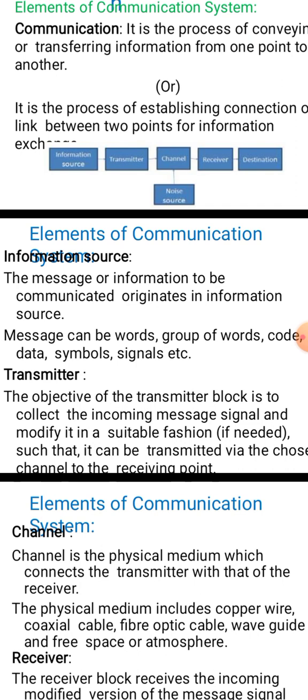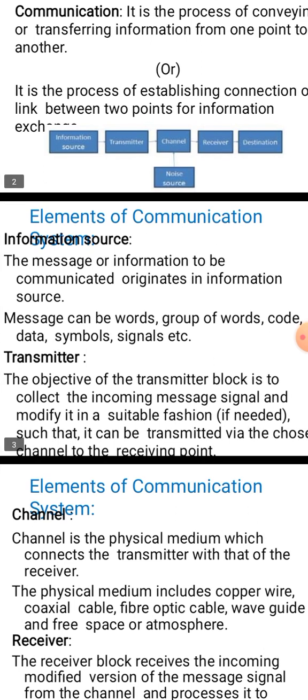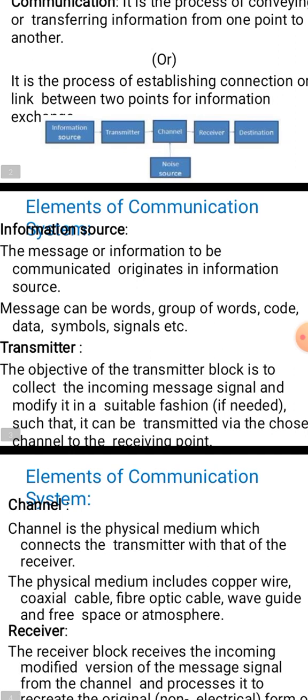The baseband signal, or message signal, originates at the information source. This message may be a human voice, still picture, or video signal. Since the message signal is in physical form and not electrical form, an appropriate transducer is used to convert this physical signal into an electrical signal. The output of the transducer, which is in electrical form, is called the baseband signal.